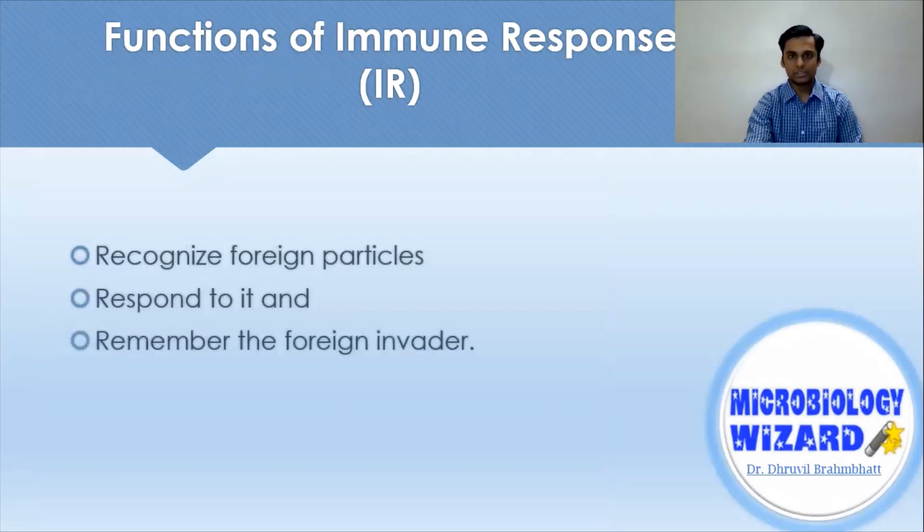The immune system is able to distinguish one pathogen from another and to discriminate between self and non-self cells. After recognition of an invader, the specific immune response amplifies and activates specific lymphocytes to attack it. This is called an effector response.